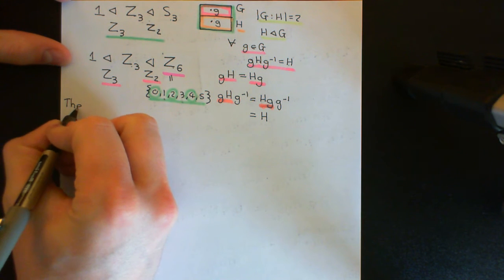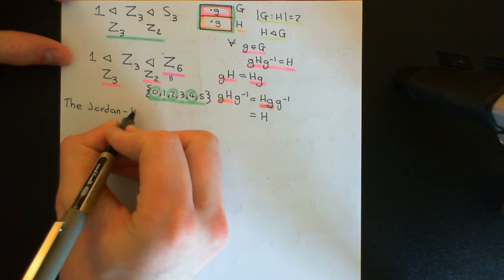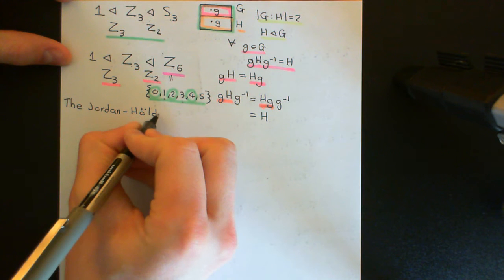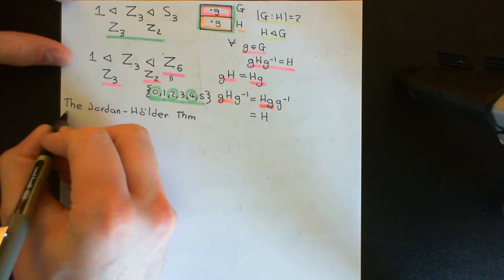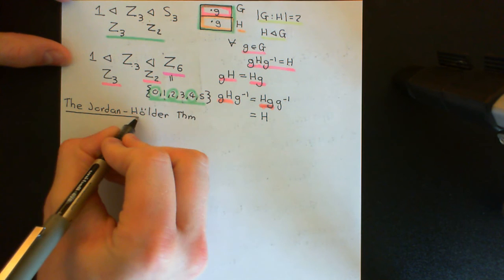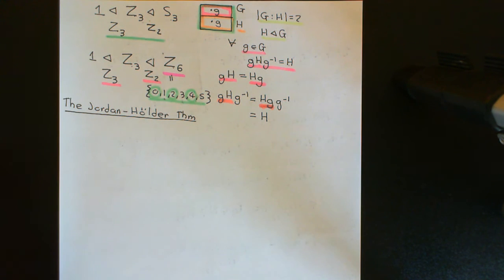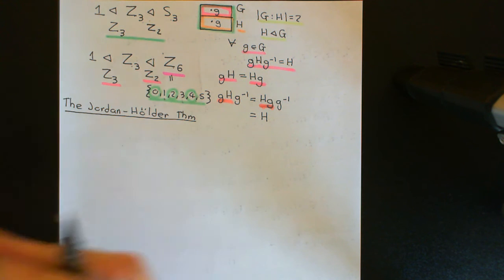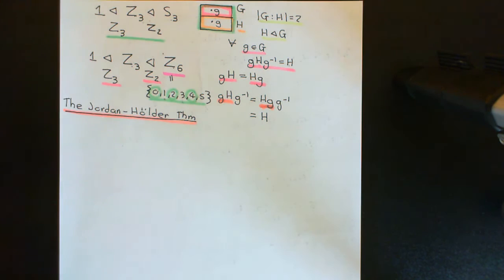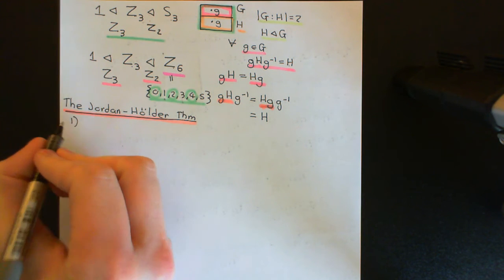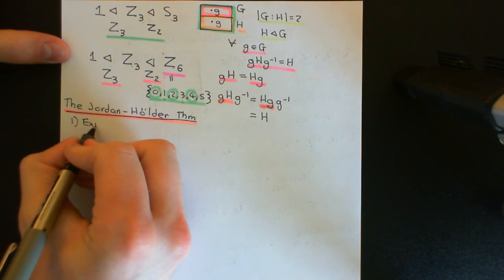So I'll firstly state the Jordan-Hölder theorem and then we will prove it. The Jordan-Hölder theorem has two parts to it. Part one we've actually already done, because part one is just the statement that if you're working with a finite group, then it will have a composition series. So part one is just the existence of composition series for finite groups.